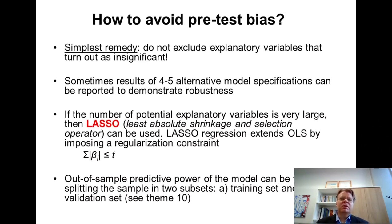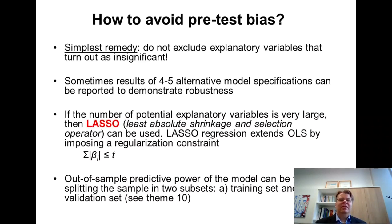Of course, if these four or five alternative models yield completely different results, then it's in some sense irresponsible to leave it just for the reader to draw conclusions. The reader needs to know which model to believe in if you as the researcher cannot make up your mind which is the correct model.